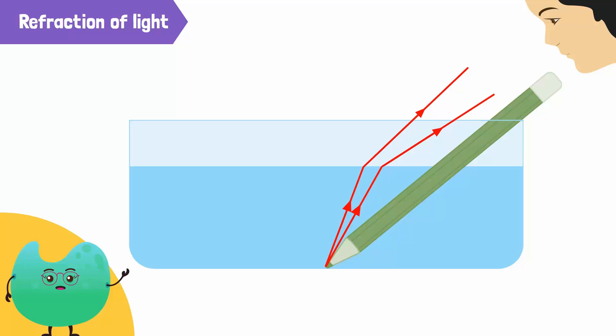When these refracted rays reach our eyes, our eyes trace them back as straight lines. Due to this, the rays appear to come from a point slightly above the actual position. Hence, the pencil appears to bend in water.